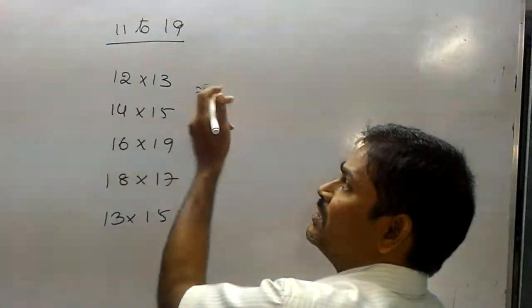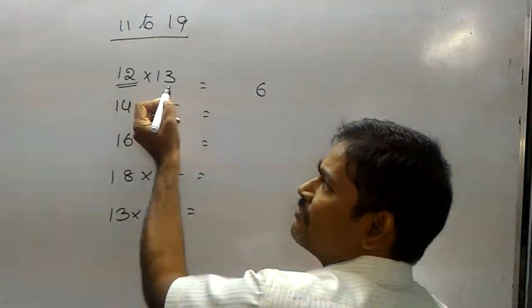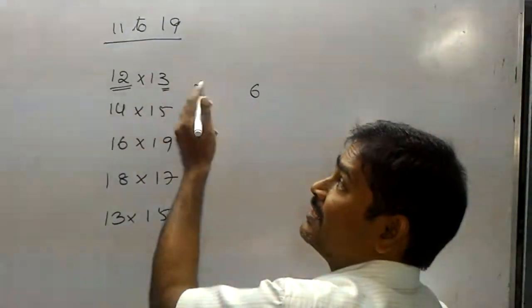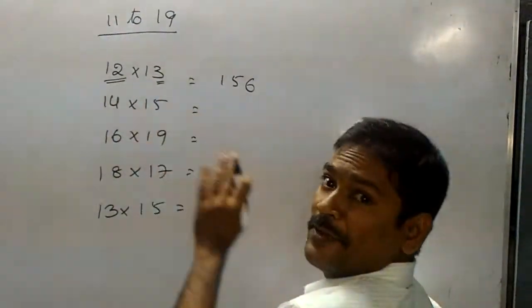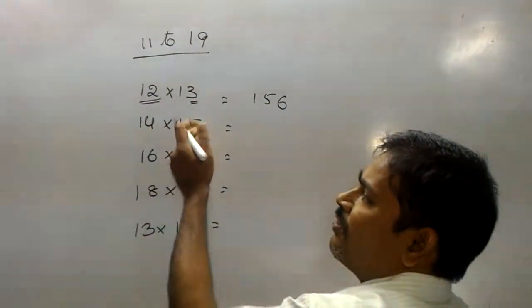First, 2, 3, 6. 12 into 13 equals 156. Next, 4, 5.